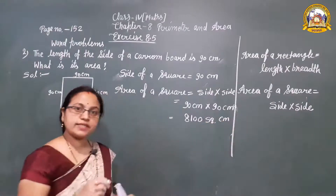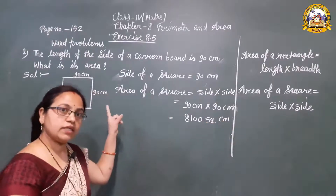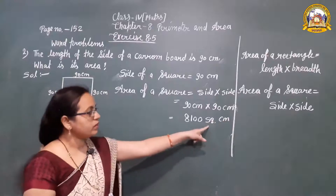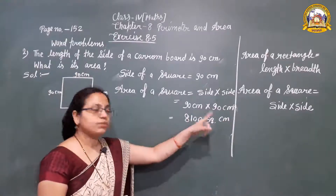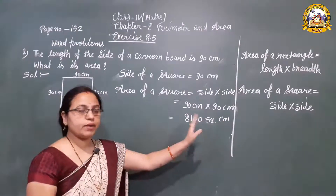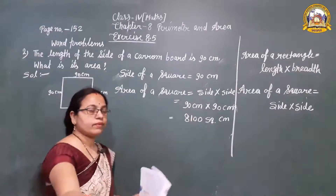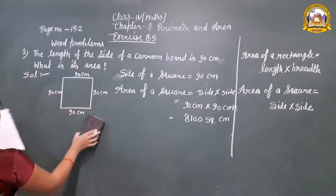The unit is square centimeters. We put 'sq' because we are finding the area. So the area of the carom board is 8,100 sq centimeters.